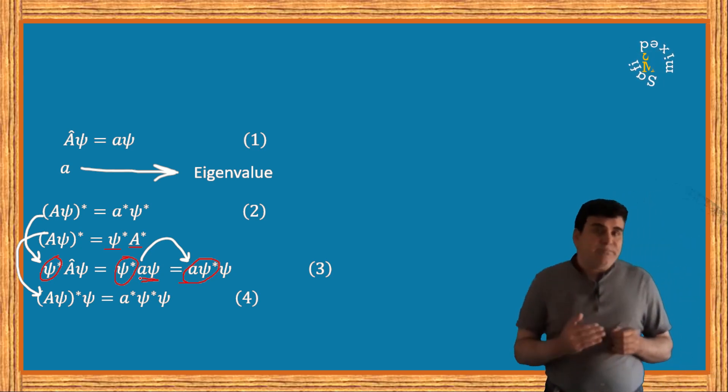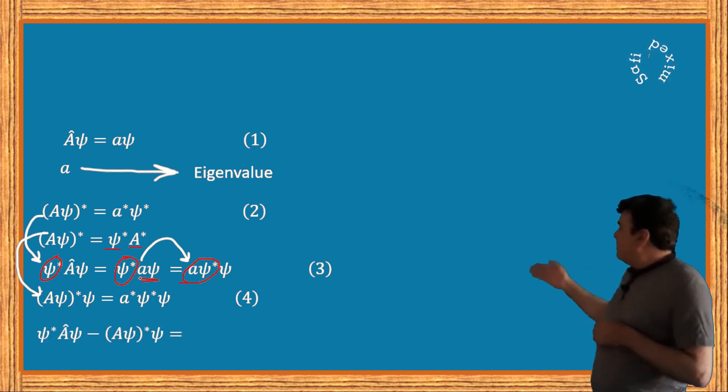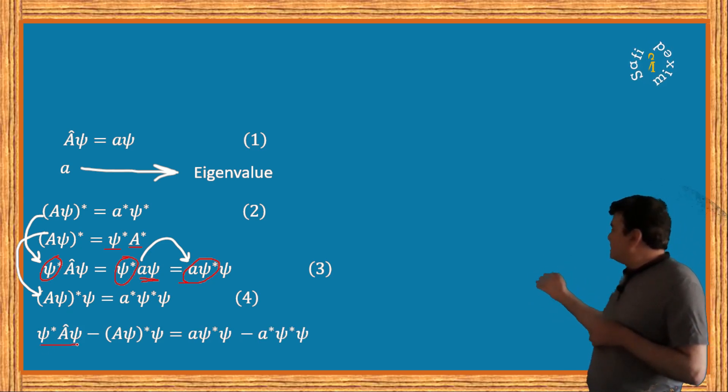Now if I subtract equation 4 from equation 3 I can write it in this form where the first term at the left side is the left side of equation 3 and the second term is the left side of equation 4.